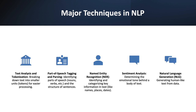Named Entity Recognition, NER, is an NLP technique used to identify and categorize key elements in text into predefined categories such as names of people, organizations, locations, expressions of times, quantities, monetary values, and more. NER is crucial for extracting valuable information from large volumes of text, making it easier to understand, organize, and retrieve specific data. It is widely used in information retrieval, data mining, and content organization.